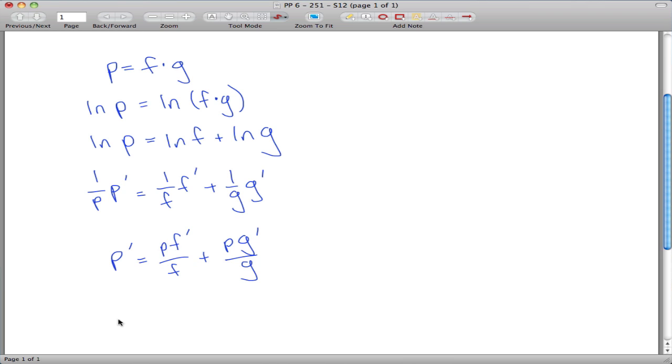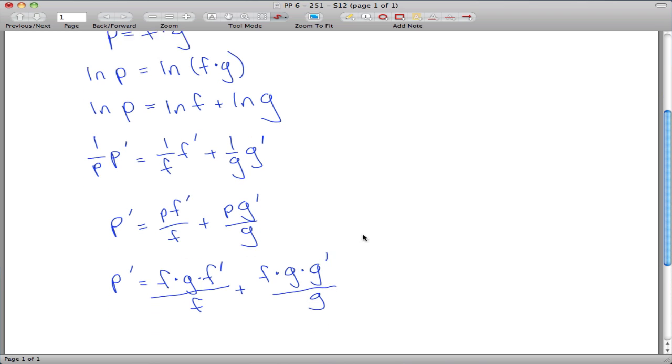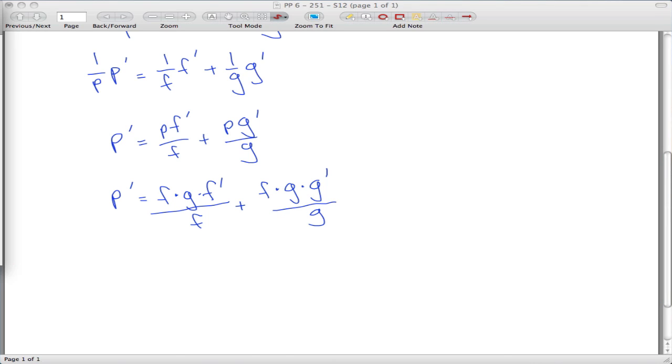Alright, so instead of a P right here, I can say P prime is equal to F times G times F prime over F. And over here, F times G times G prime over G.